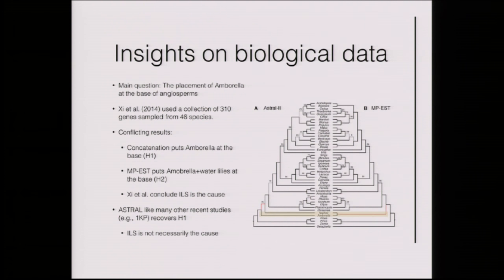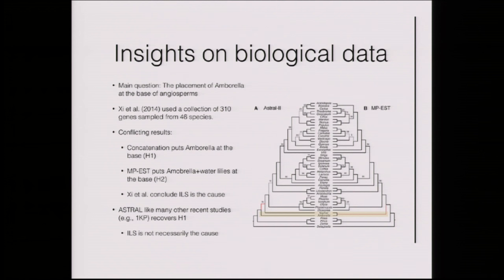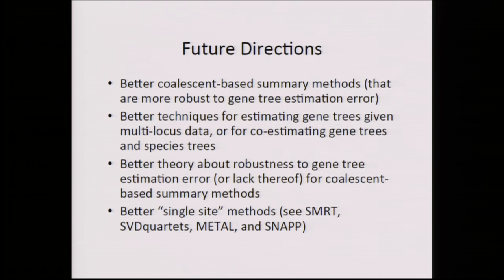On biological data: there had been a study showing the placement of Amborella depended on whether you did concatenation or coalescent analysis, with the argument that since there's a rapid radiation, the coalescent analysis should give the correct tree and concatenation should be wrong. We reanalyzed the data using ASTRAL — also a coalescent analysis — and this time got a tree matching the concatenation analysis. This tells you it's not just a question of whether you're doing a coalescent analysis, but which coalescent analysis you're doing.